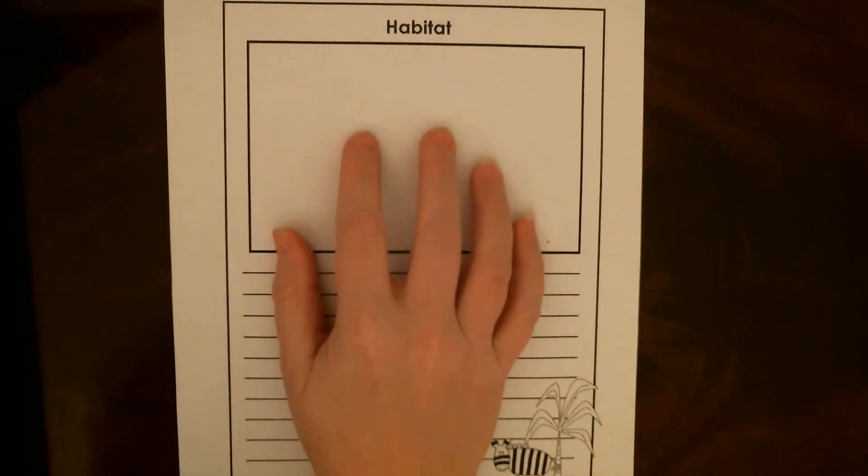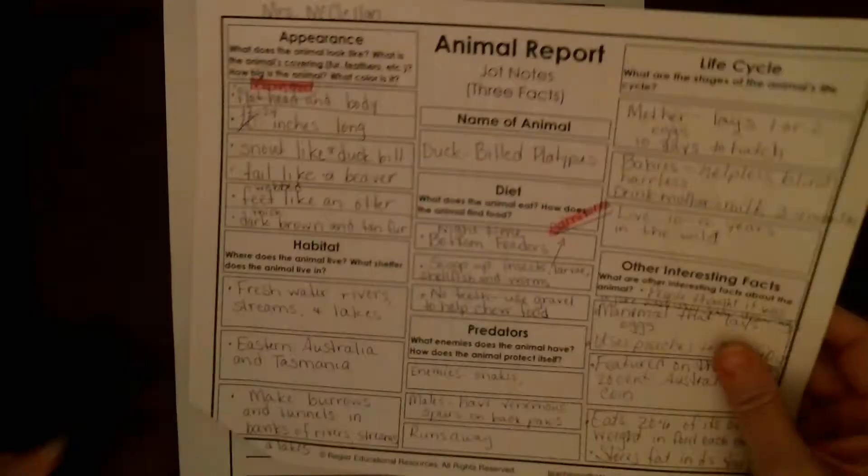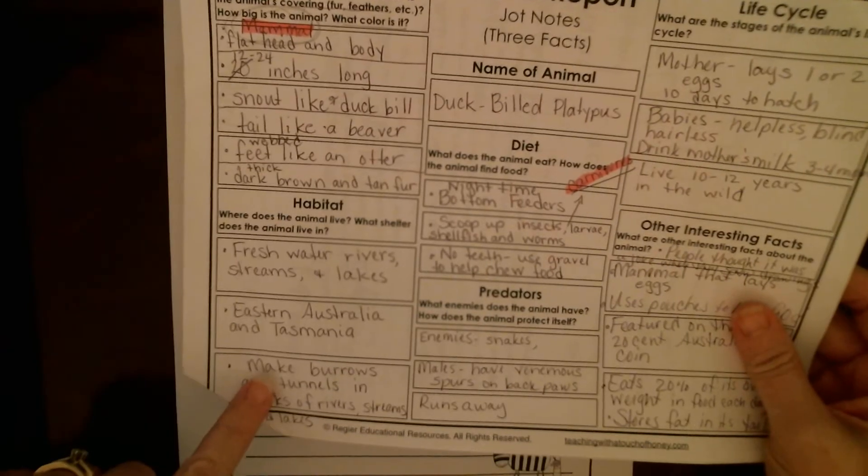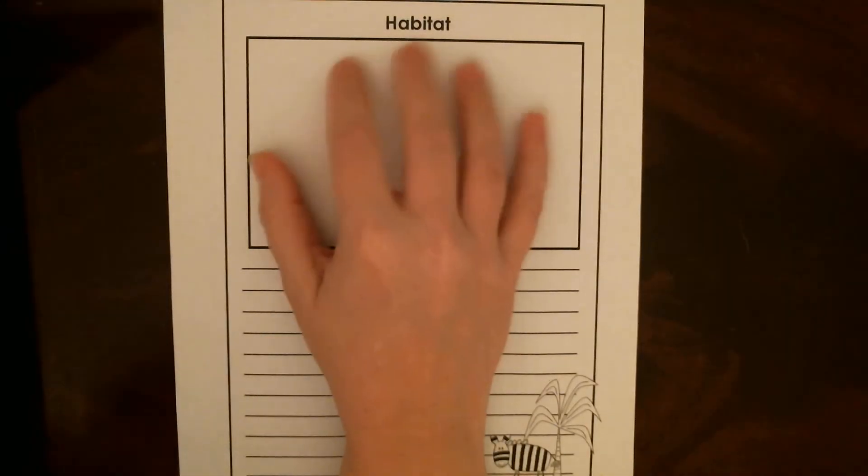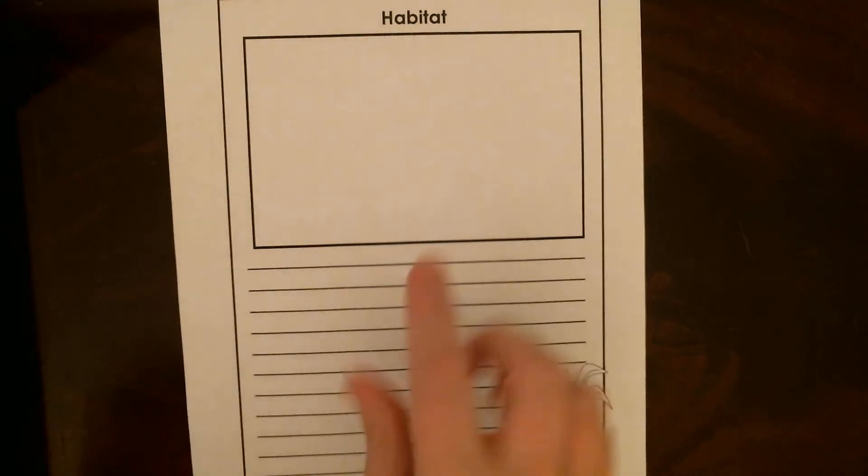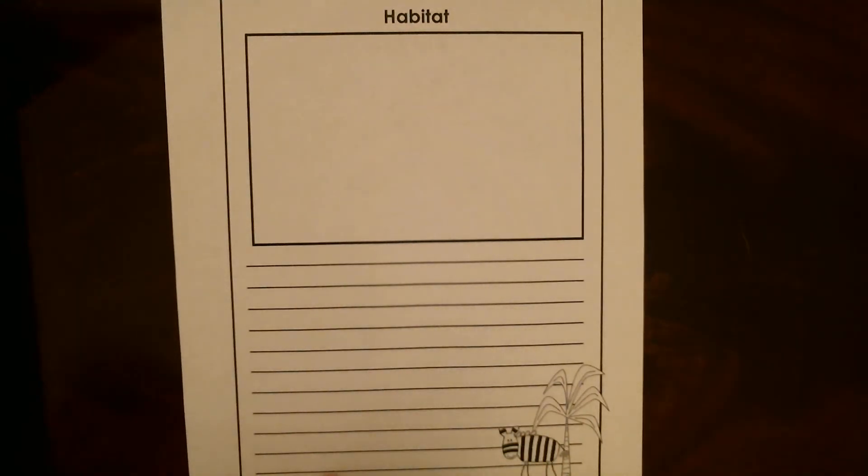Hey guys, so today in science you are going to use your notes on your animal's habitat and you're going to be drawing a detailed picture of your animal in its habitat and writing five sentences about where your animal lives, what the shelter is, and how it makes that shelter.